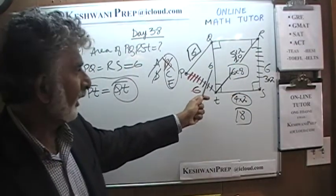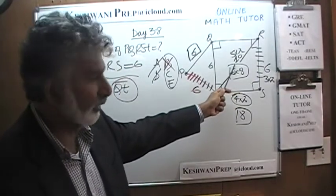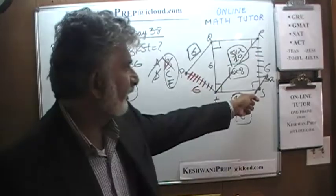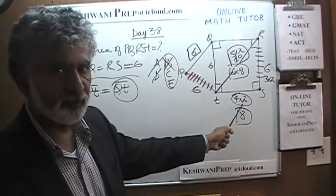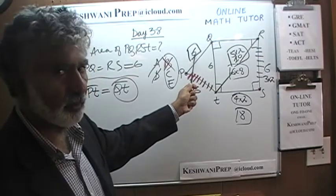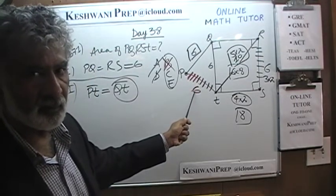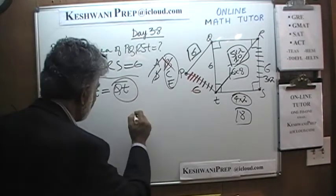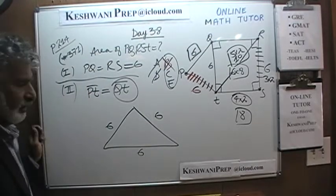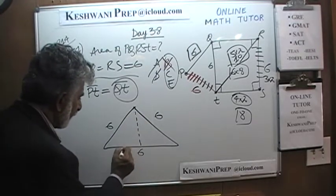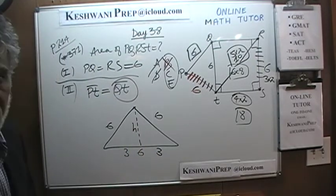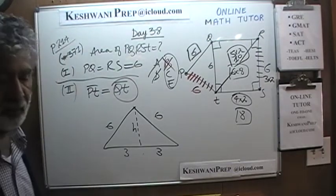If RS is 6, the adjacent side must also be 6. And if this side is 6 and this side is 10 — which was given to us — and this is a right angle triangle, we can figure out the missing side: it is 8. That's how we figured out the area of the rectangle. Now we know the triangle side is 6 from the second statement. We can figure out the area of the equilateral triangle — drop a perpendicular, this side is 3, this side is 3, figure out the height, then calculate the area. Therefore, the answer is C.